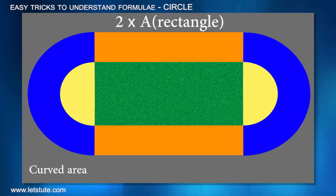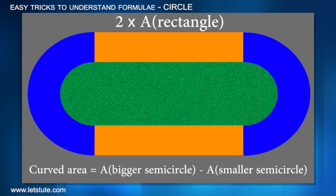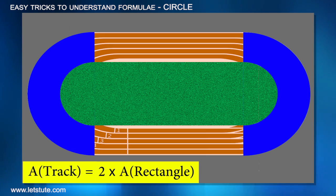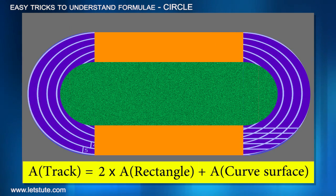Yes, we will subtract the area of the smaller semicircle from the bigger one. That will give us the area covered by the curve. Now we have all the areas we need. The area of the running track will be twice the area of the rectangles plus twice the area of the curved surface.